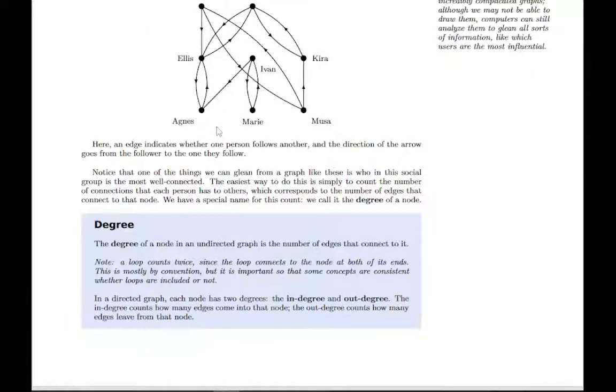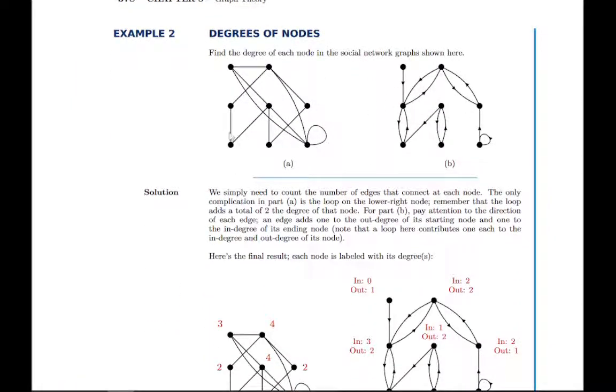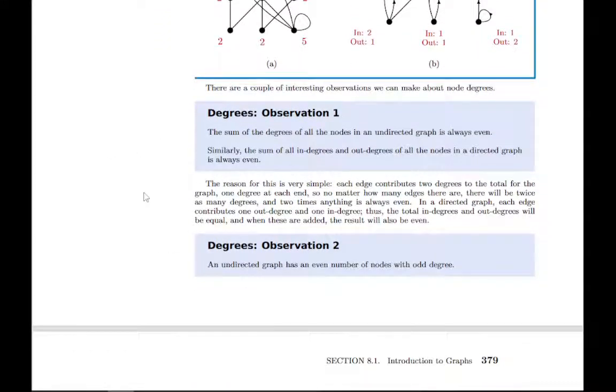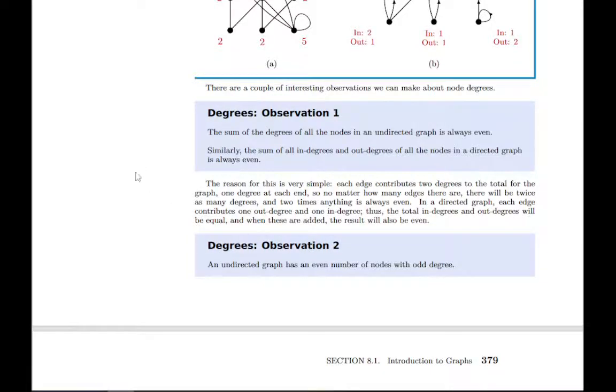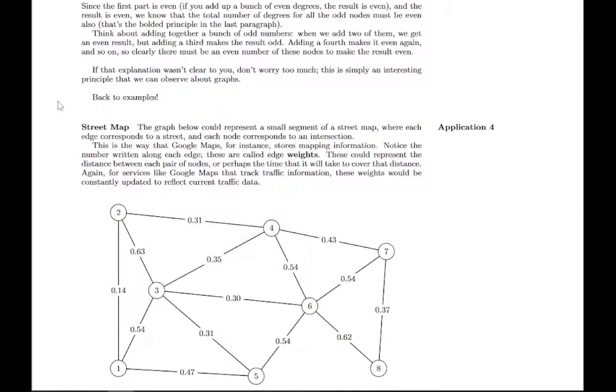If it's an undirected graph, you just count degree. If it's directed, you have an in-degree and an out-degree. Also note that a loop counts twice because it basically connects at both ends. So when you're counting degree, you count the number of edges that come into it, and a loop would count twice. There are a couple of observations on the number of degrees in a graph, and you can read through those and the explanations behind them.